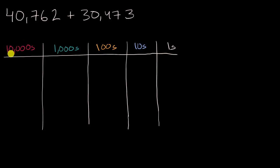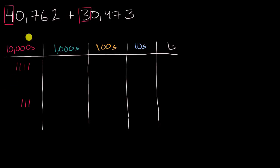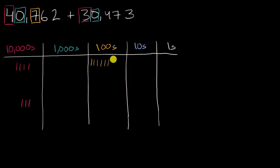Let's first represent these numbers. Here I have four 10,000s and here I have three 10,000s. I'm going to add these two together eventually. In both of these numbers, I have zero thousands, so I have nothing in that column right now. Here I have seven hundreds, and here I have four hundreds.